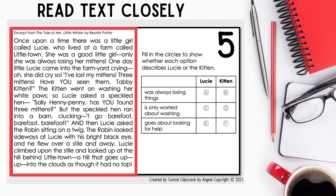So Lucy asked a speckled hen, 'Sally Henny Penny, has you found three mittens?' But the speckled hen ran into a barn, clucking, 'I go barefoot, barefoot.' And then Lucy asked a robin sitting on a twig. The robin looked sideways at Lucy with his bright black eye, and he flew over a stile and away. Lucy climbed upon the stile and looked up at the hill behind Littletown, a hill that goes up into the clouds, as though it had no top.